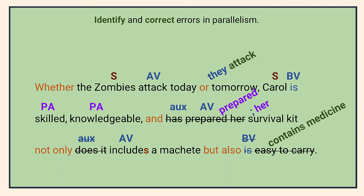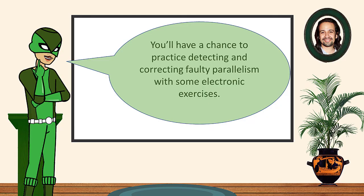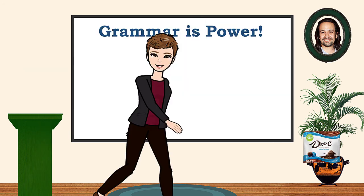If you have any doubts, make a note to ask your teacher to review your work. Before we move on to faulty comparison — a sort of parallel adjacent type of mistake — your teacher may assign you some additional electronic practice in detecting and correcting faulty parallelism. See you in the next video!